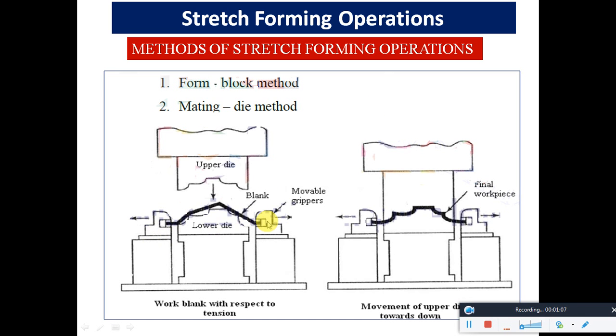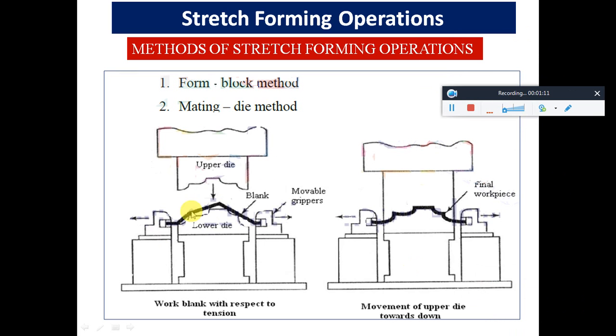In the form block method, the lower die replicates the actual final shape required. The upper die has the same projections, and when pressed, the sheet metal is formed to the required shape.